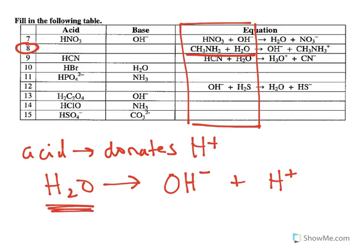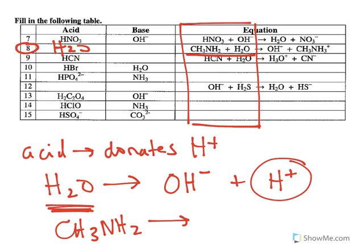So water is the thing that donated a hydrogen ion, so water is the acid. And as far as the base, the CH3NH2 picked up that hydrogen ion to become CH3NH3+. Since it accepted the hydrogen ion, that makes it the base. So that was a common problem I saw with your homework last night.